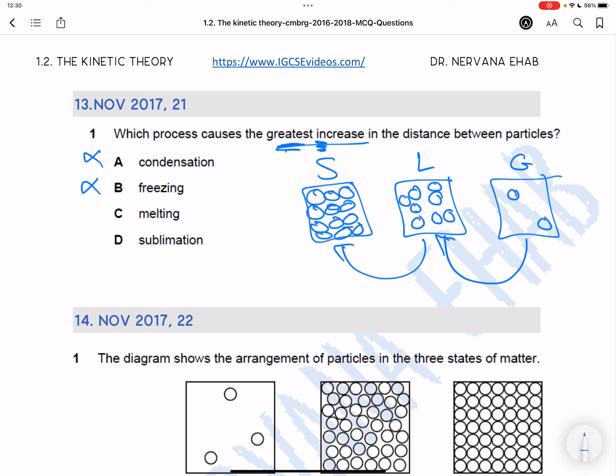Melting is solid to liquid and sublimation is solid to gas. Solid to gas is the greatest increase in distance between particles because particles essentially had no distance between them and now they have really big distances between them.